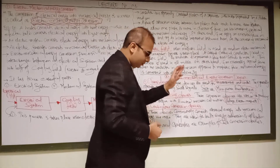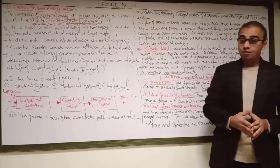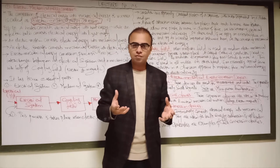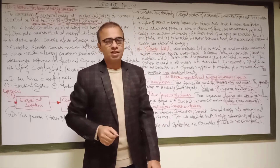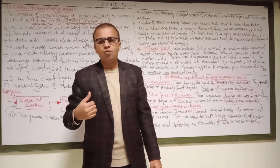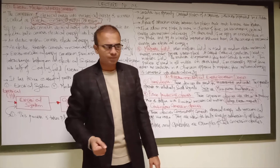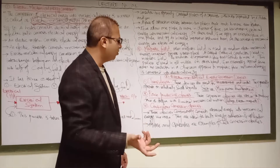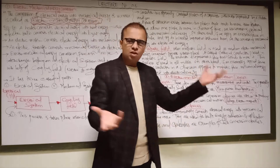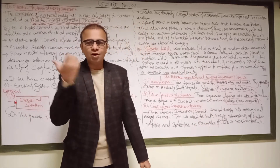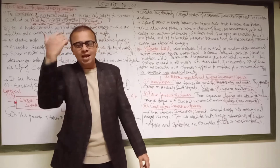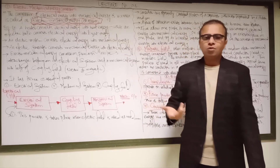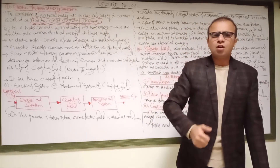Now we have electromechanical energy conversion devices — three major categories. First is the transducer. The fundamental definition of a transducer is that it converts one form of energy into another form of energy. Transducers are used for small signal measurement and controlling purposes. Examples include microphones and loudspeakers. When using a cellular phone, there is a microphone and a receiver — your voice energy is converted into electrical energy. This is a transducer operation.